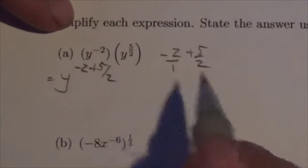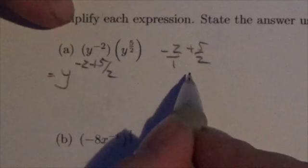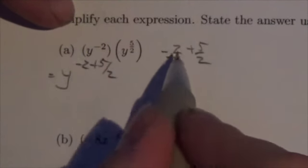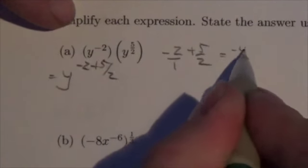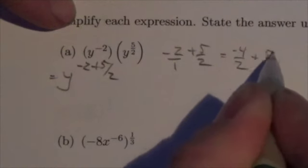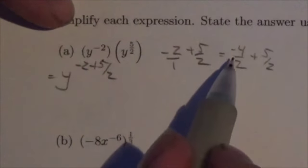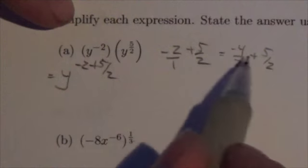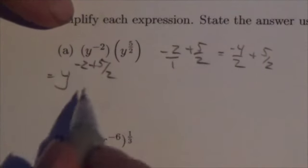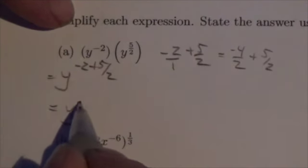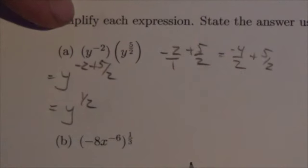Okay, now I got to do that. So negative 2 plus 5 halves. This is negative 2 over 1. To get a common denominator, it's going to be 2. I got to multiply this by 2. So this is going to be negative 4 over 2 plus 5 over 2. And negative 4 plus 5 just becomes 1. So 1 over 2. So then my answer simply becomes y to the 1 half. That's convenient.